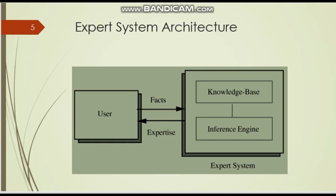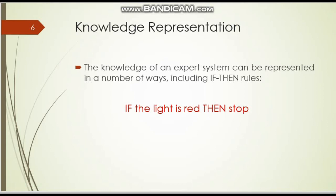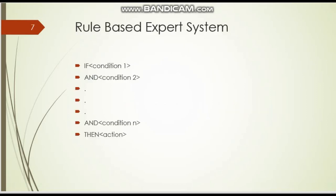For example, let us take the example of a traffic room: if the traffic light is red, then we have to stop. This is a manual if-then condition. Similarly, we can use if-then statements in a computer program. For example, if condition 1 and condition 2 and condition 3 are met, then we will take the action.